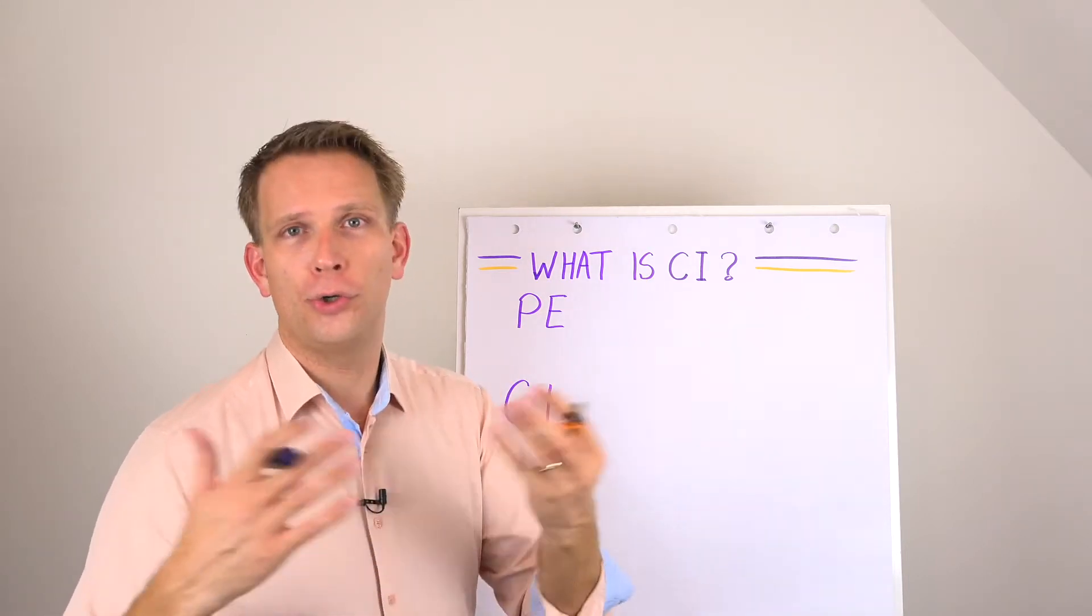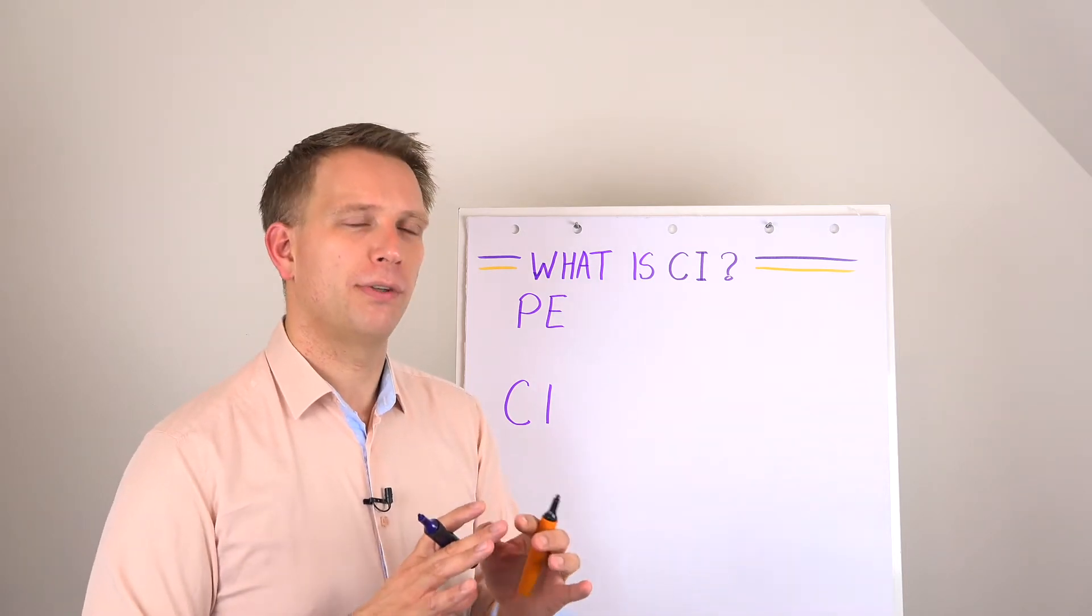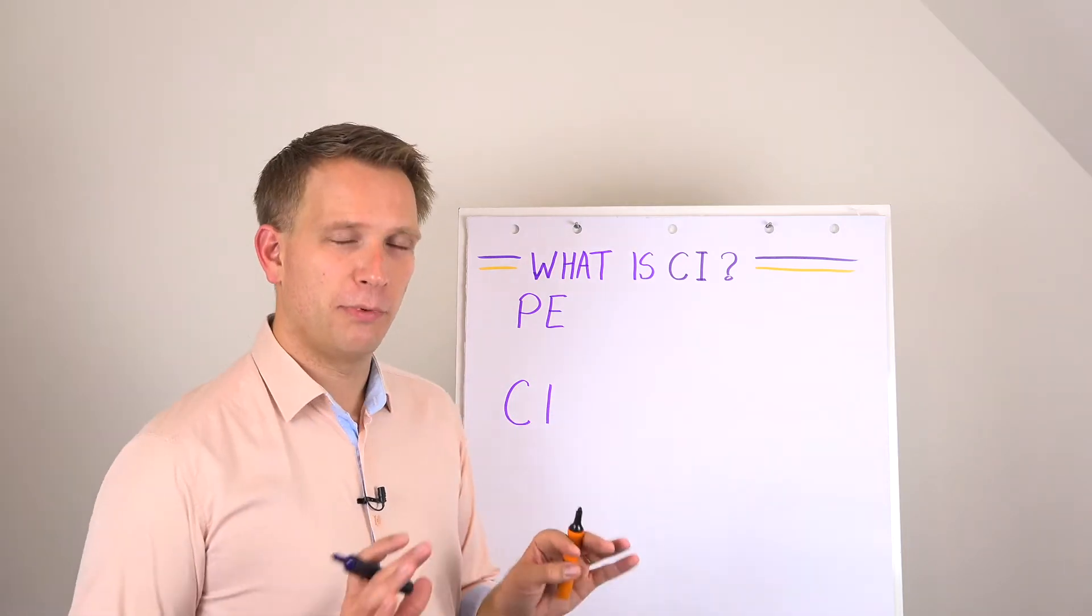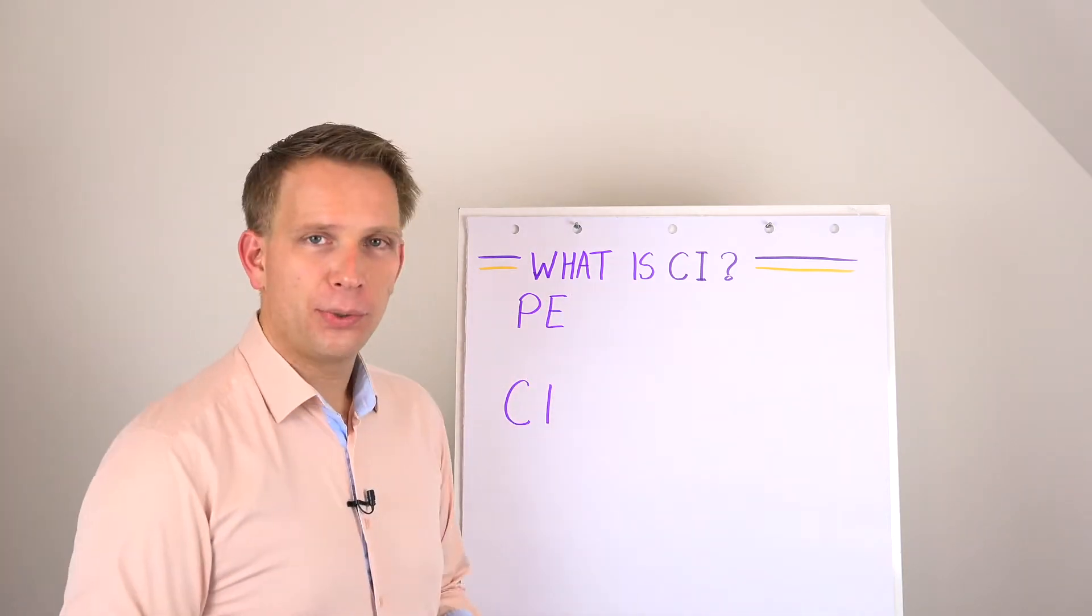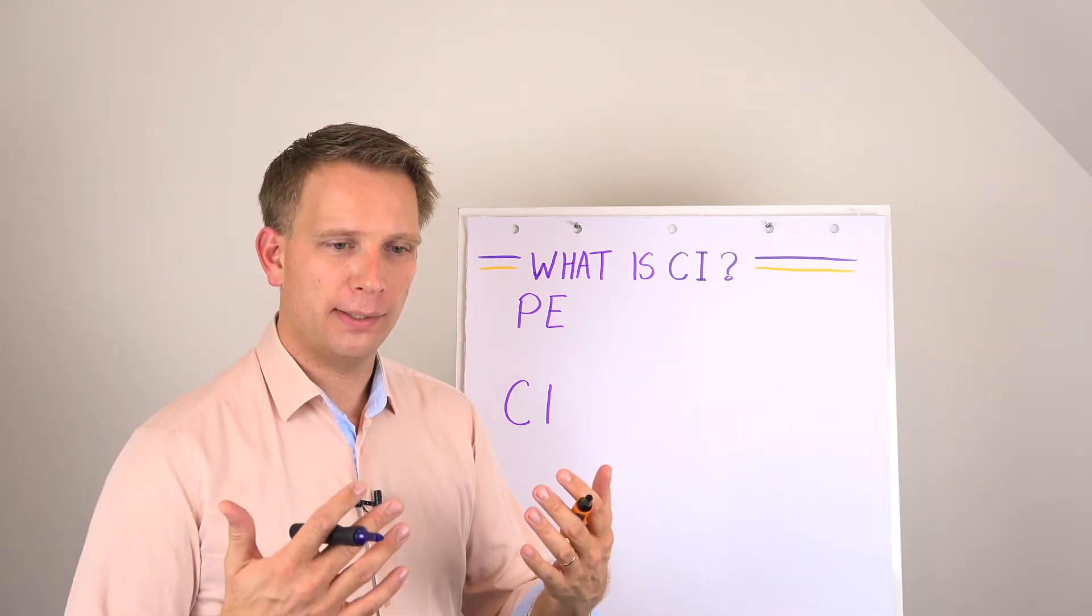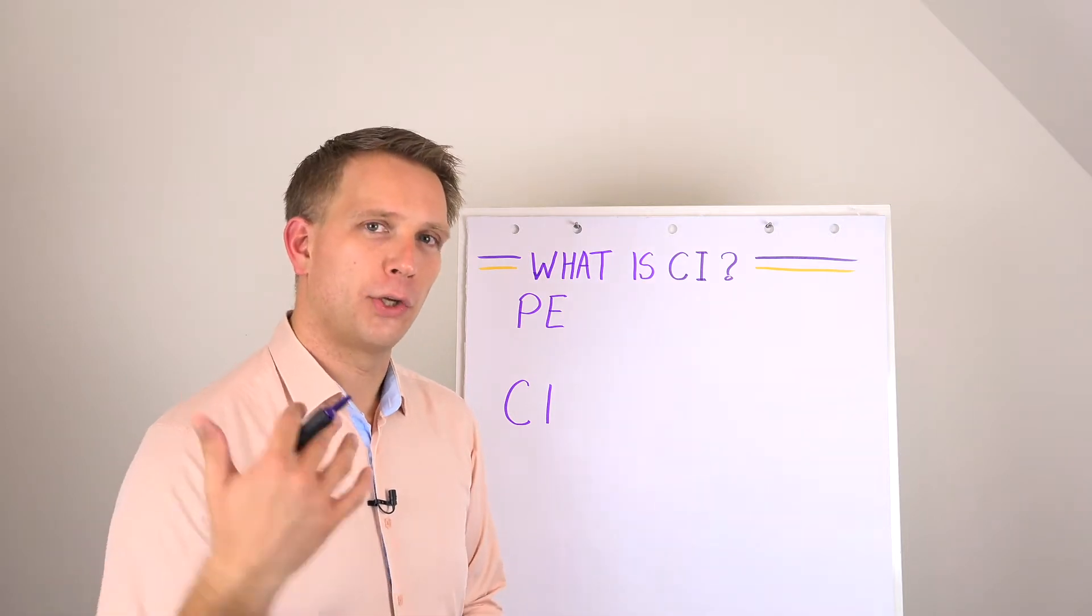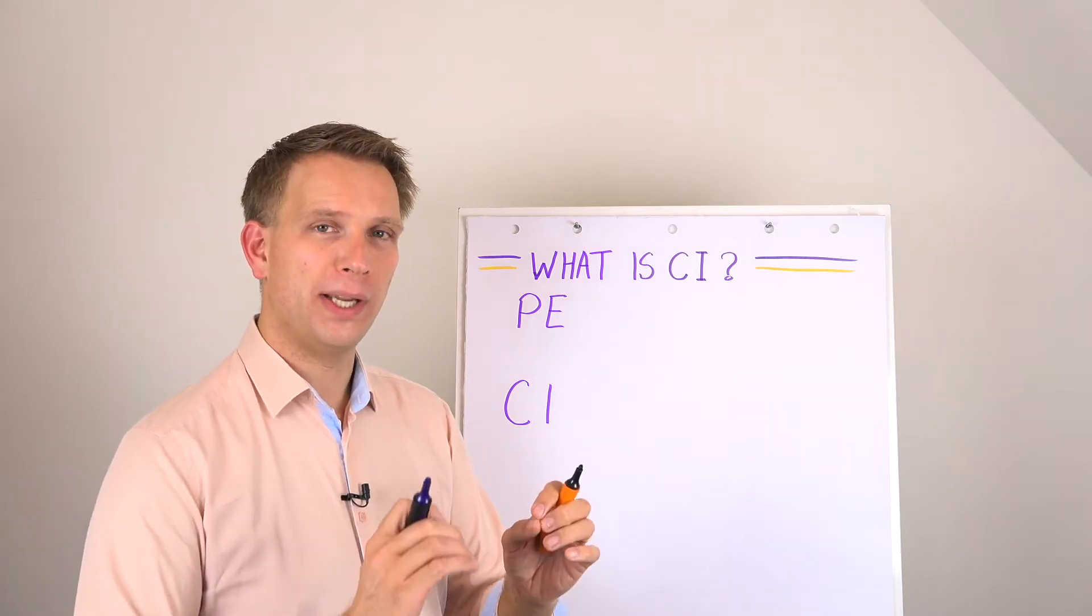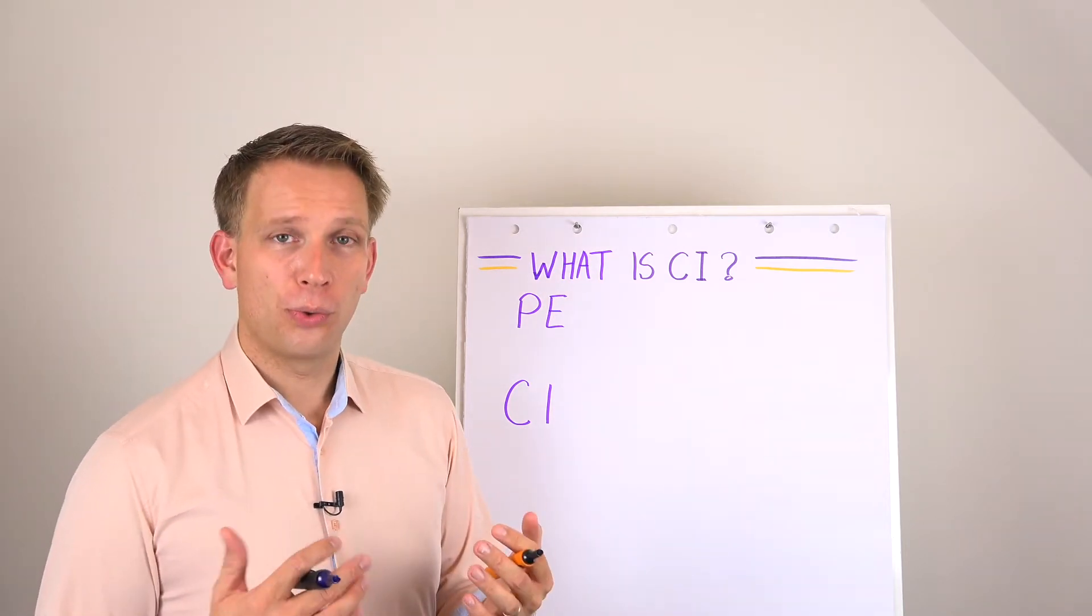When we check it in an organizational setting, what you will almost always see popping up very close to continuous improvement or CI is performance excellence. And these two are very close. Performance excellence, and in fact, I would say that continuous improvement is a part of performance excellence.